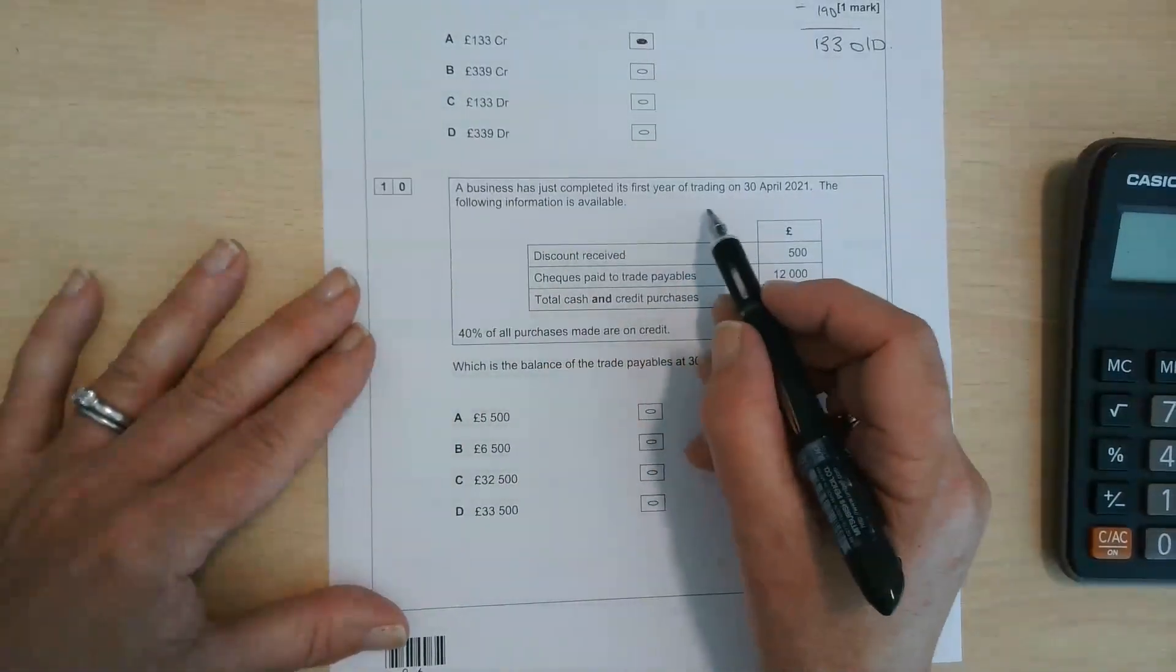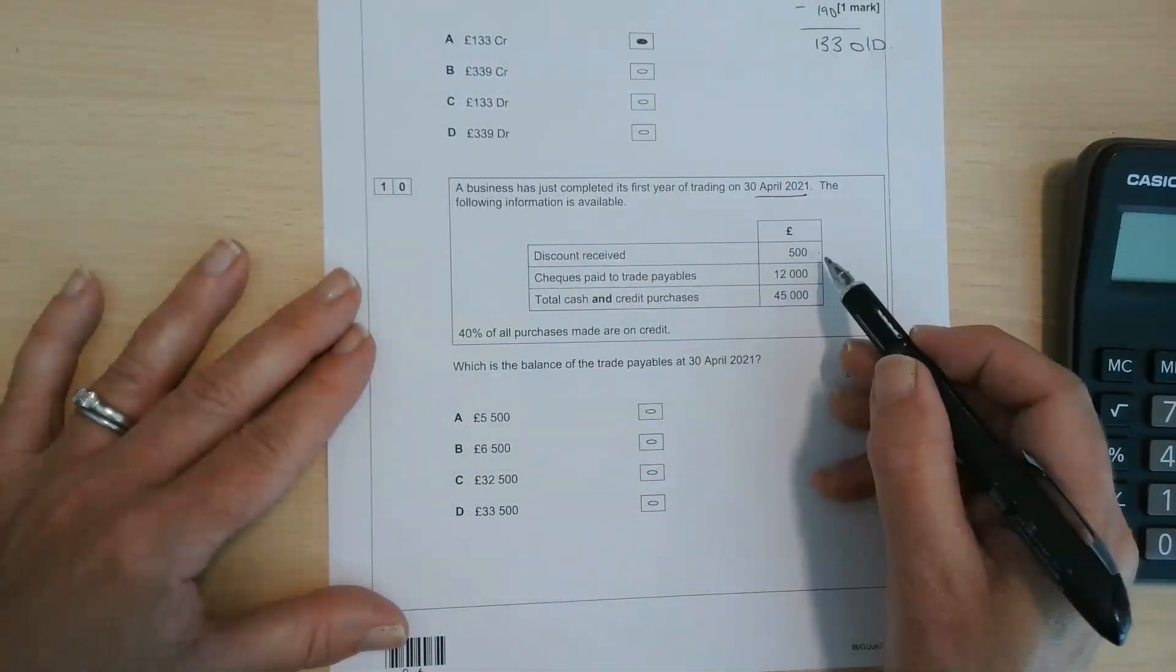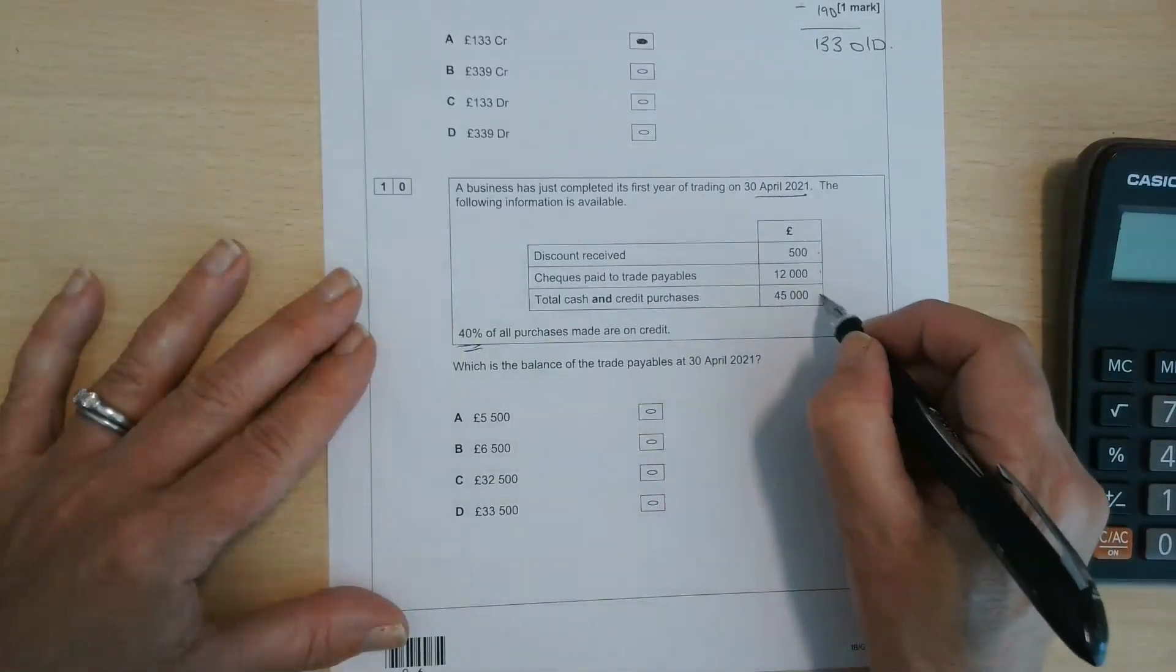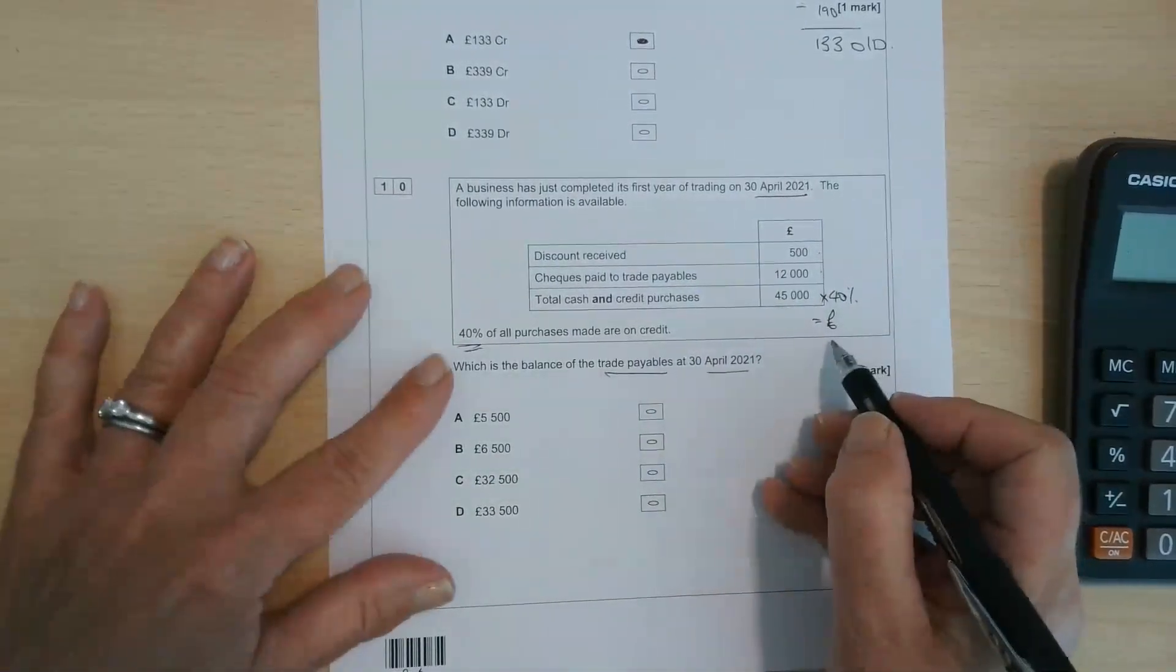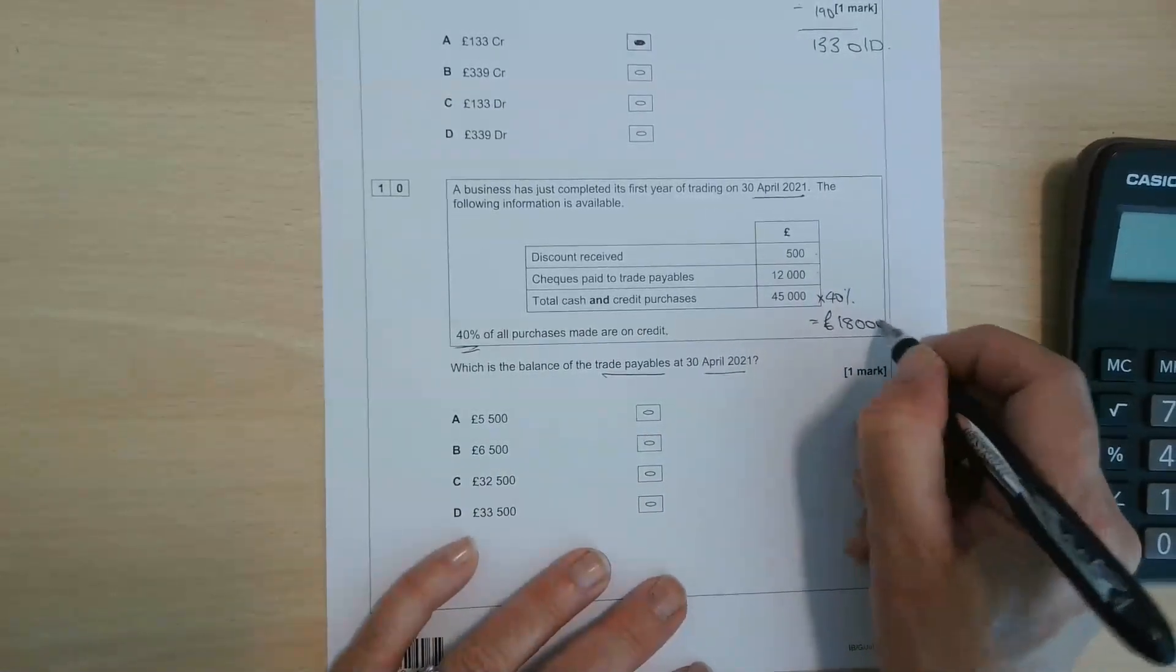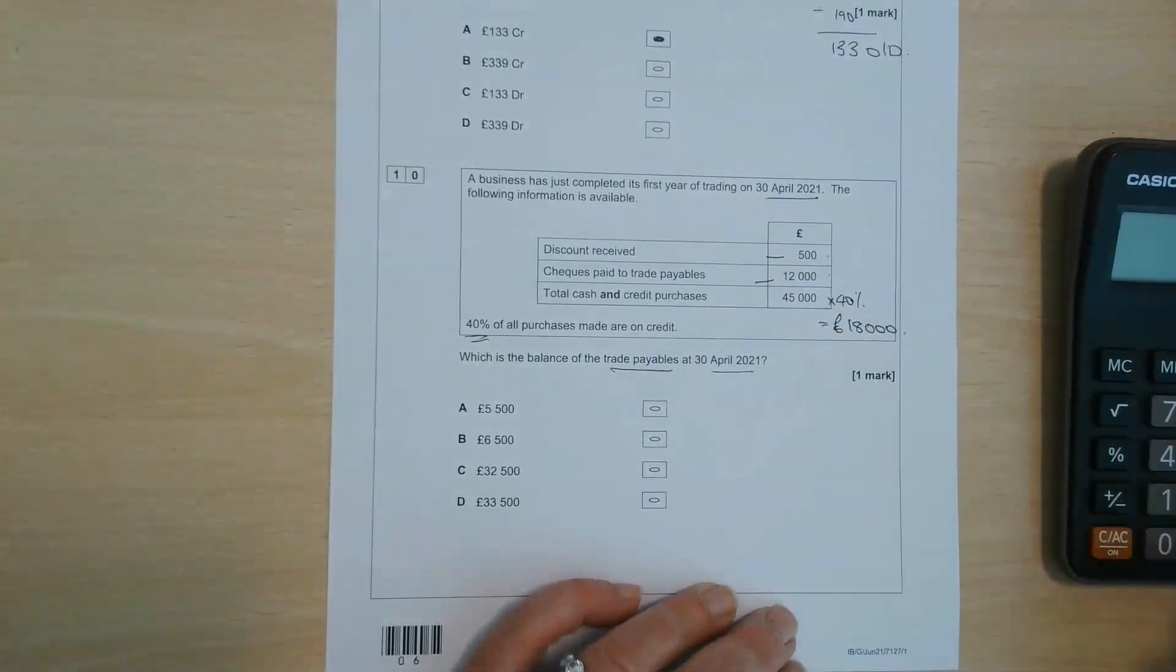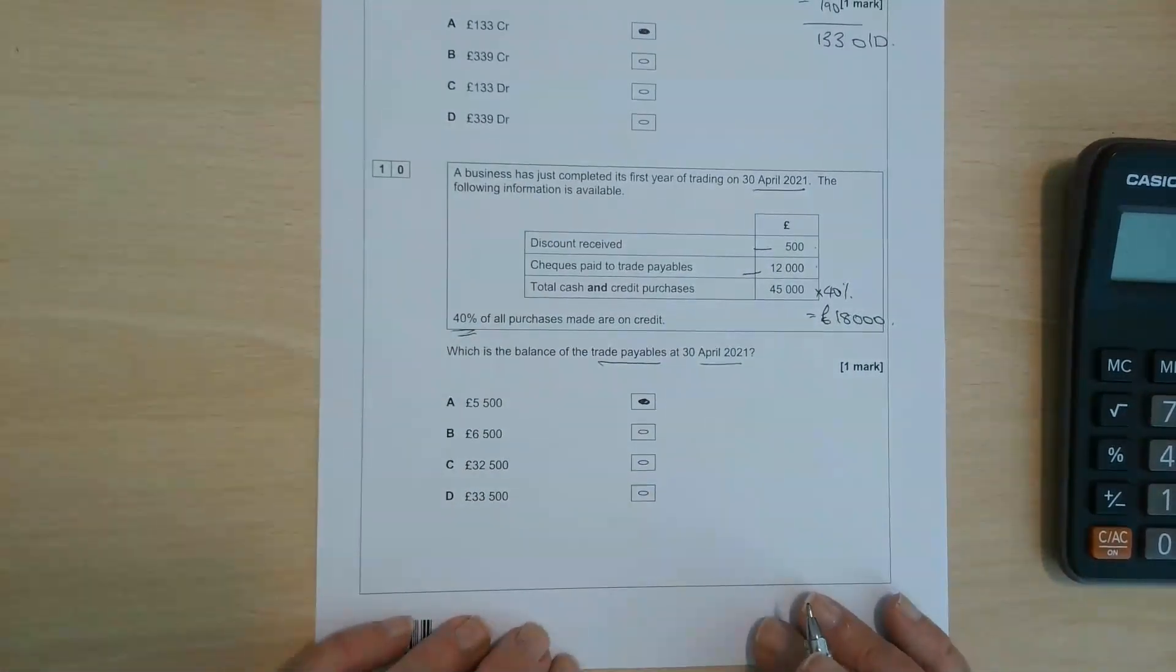Number 10, a business has just completed its first year of trading on the 30th of April, 2021. Following information is available. We've got discounts received, checks paid to trade payables, total of cash and credit purchases. 40% of all purchases are made on credit. So let's times that by 40% to find out what the credit purchases are, because we're going to try and work out trade payables at the end of the year. So 45,000 times 40% means that our credit purchases are £18,000. We've received discount of £500. So let's take that away because that will reduce it. And we've paid £12,000 to the suppliers. So we're actually going to end up owing them £5,500. So the answer there is A. Thanks very much for watching.